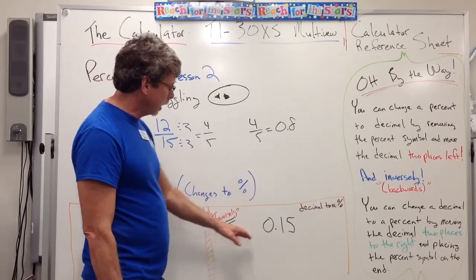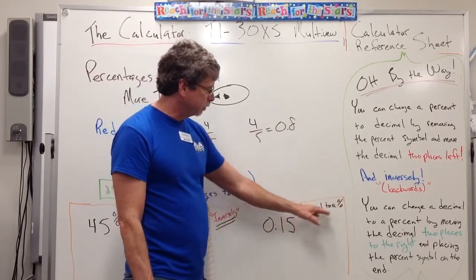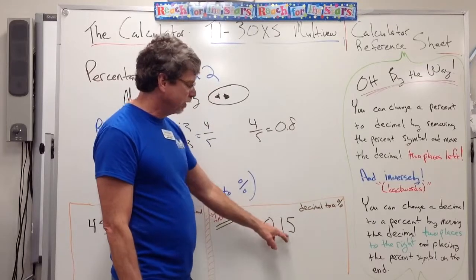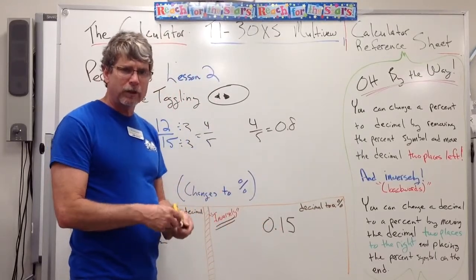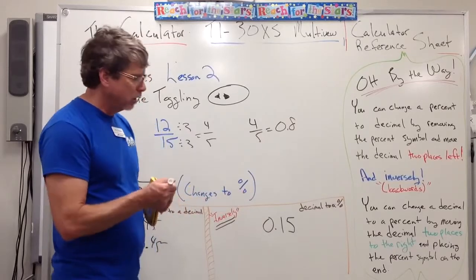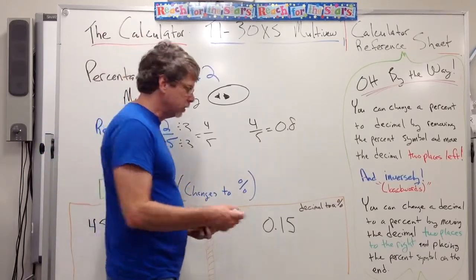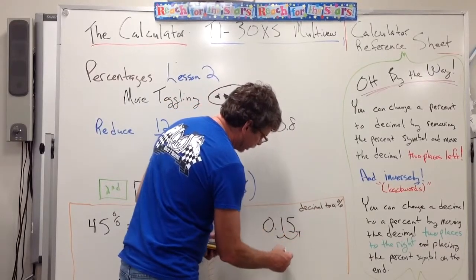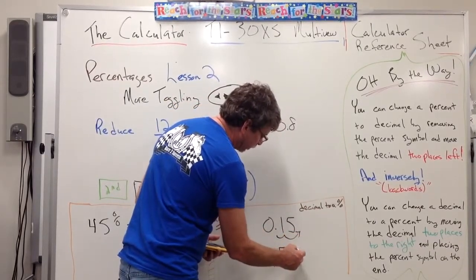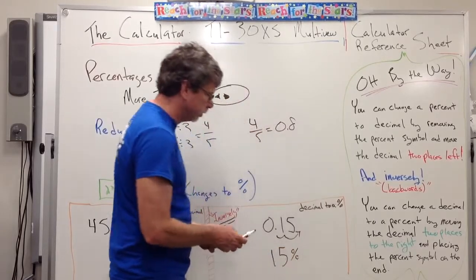So inversely, I could change 0.15 from a decimal to a percent. Again, this is 15 hundredths. If you pick up on it, 15 hundredths, that's 15%. Or if you want to just pay attention to, hey, that's a decimal, I can just slide the decimal two places to the right, bring down your 15, and then just stick on a percent symbol, and you have your 15%.